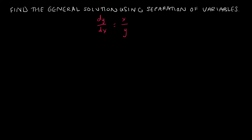Our first question is pretty straightforward. We are asked to find the general solution — the general solution means we're going to have a C involved; we're not going to solve for C — and we're going to use separation of variables. This is a very easy equation. You can just do some cross multiplication here, and by doing that, I end up on the left side with y dy and on the right side with x dx, or vice versa. It really doesn't matter.